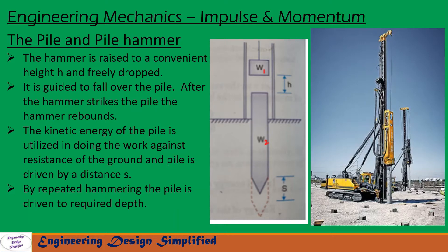In the previous video we saw case 1 where hammer and pile move together after impact. Now in this video let us see case 2, that is hammer rebounds after impacting the pile. The hammer is raised to a convenient height h and freely dropped, guided to fall over the pile. After the hammer strikes the pile, the hammer rebounds. The kinetic energy of the pile is utilized in doing work against the resistance of the ground, and the pile is driven by a distance s. By repeated hammering the pile is driven to the required depth.